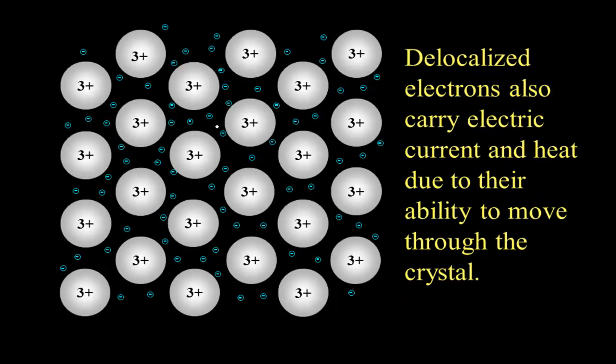How about electric current? Can this model explain that? Well, electric current is simply the movement of charge. And electrons are constantly moving through these spaces between the cations. They therefore are very able to carry an electric current.